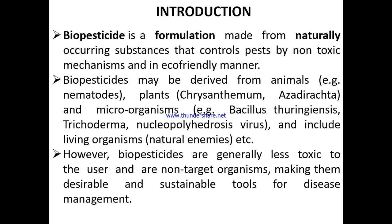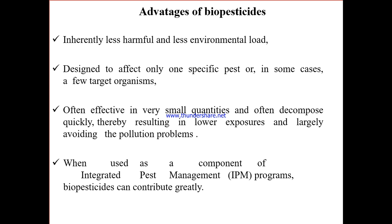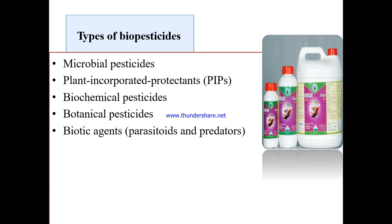Biopesticides represent a proper sustainable approach for disease management. Advantages include being inherently less harmful with very low environmental load, designed to affect only one specific pest or closely targeted organisms, often effective in very small quantities, and they decompose quickly, resulting in lower exposures and largely avoiding pollution problems. Types of biopesticides are: microbial pesticides, plant incorporated protectants (PIPs), biochemical pesticides, botanical pesticides, and biotic agents like parasitoids and predators.